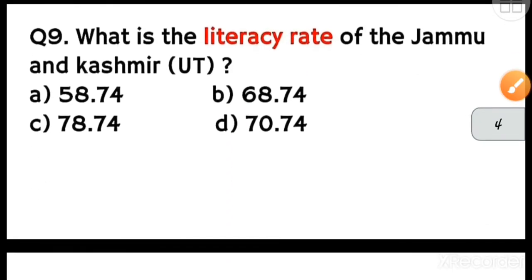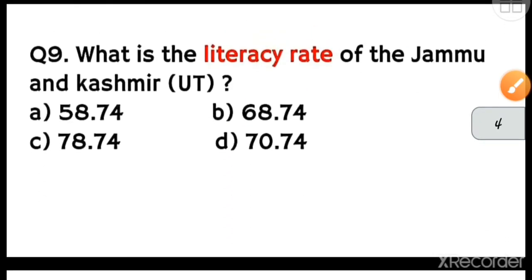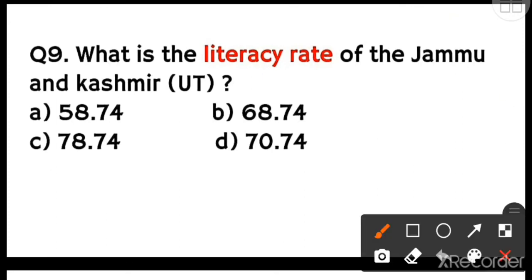Next question: what is the literacy rate of Jammu and Kashmir UT? Option A is 58.74%, B is 68.74%, C is 78.74%, and D is 70.74%. The literacy rate of Jammu and Kashmir UT is 68.74%. Option B is the correct answer.